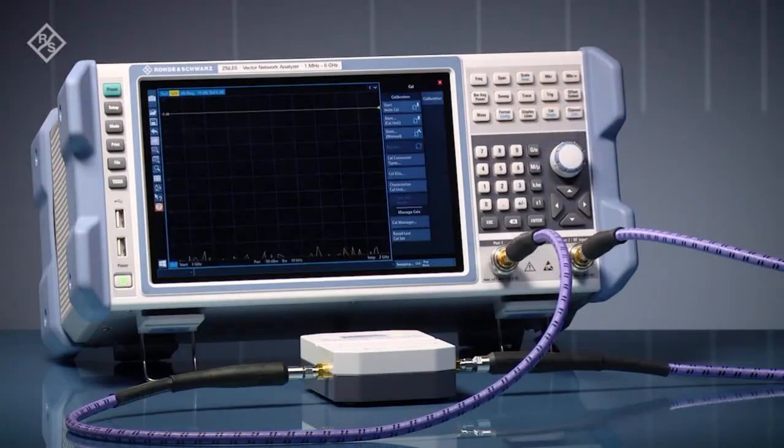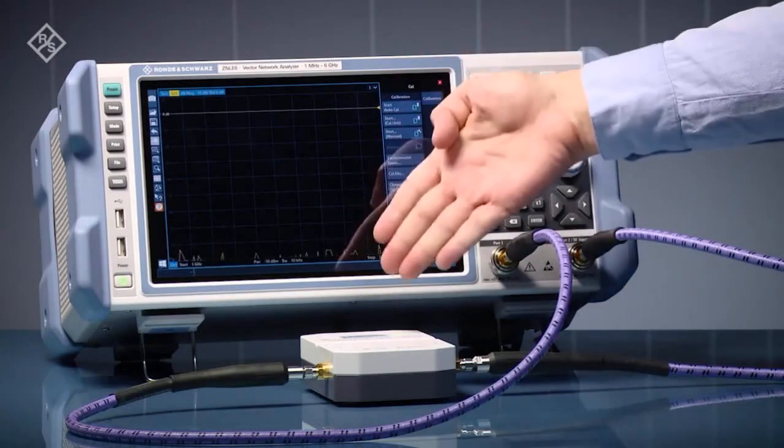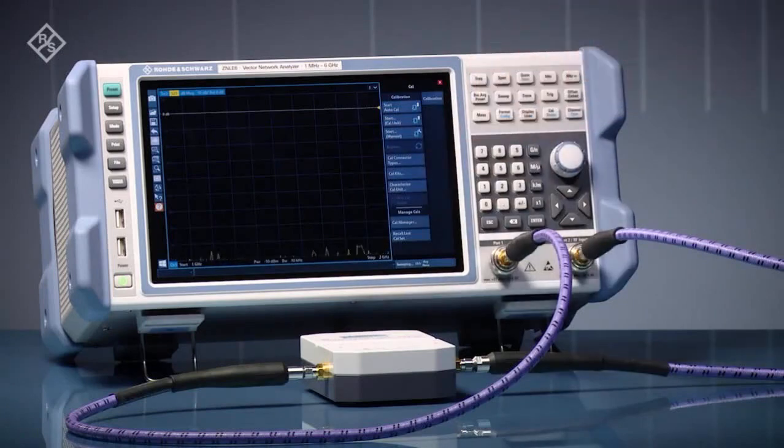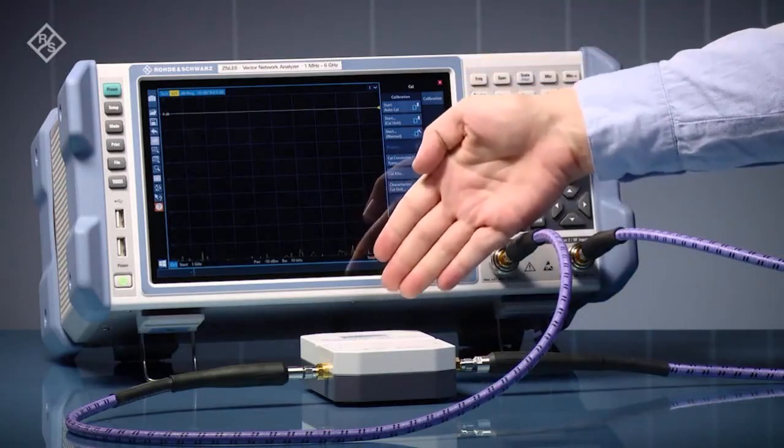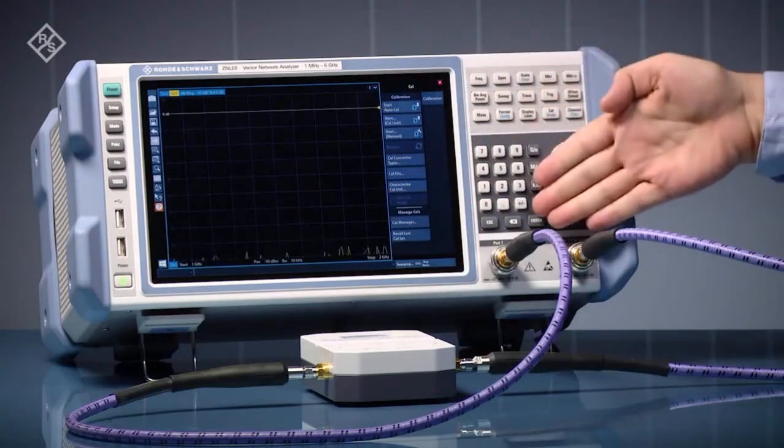Do you want to speed up user calibration for your VNA measurement? Use a calibration unit that requires only one connection per port. Connect the calibration unit to the instrument's USB port, connect each RF port, and press the calibration button.